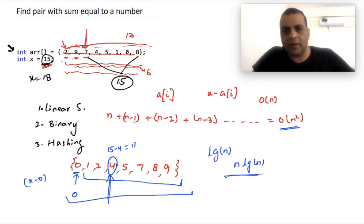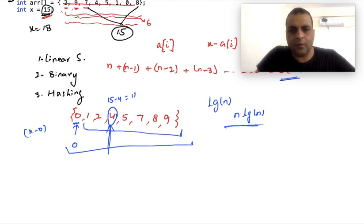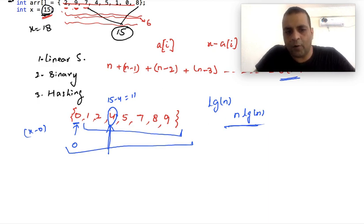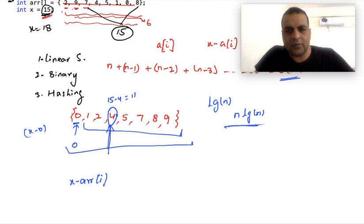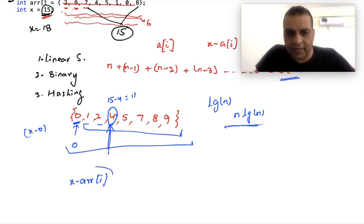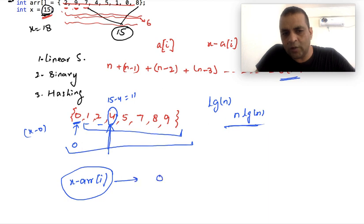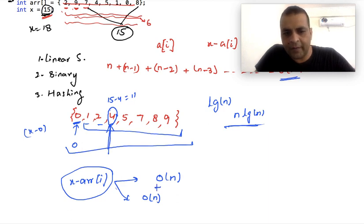The third approach is to put all values of the array into a hash map. Once all values are in the hash map, we can search for x minus arr[i] in constant time. We perform this search n times — once for each element — so the total time taken is O(n). However, this approach requires O(n) extra memory to store the hash map, whereas the binary search and linear search solutions are in-place algorithms that take constant extra space.